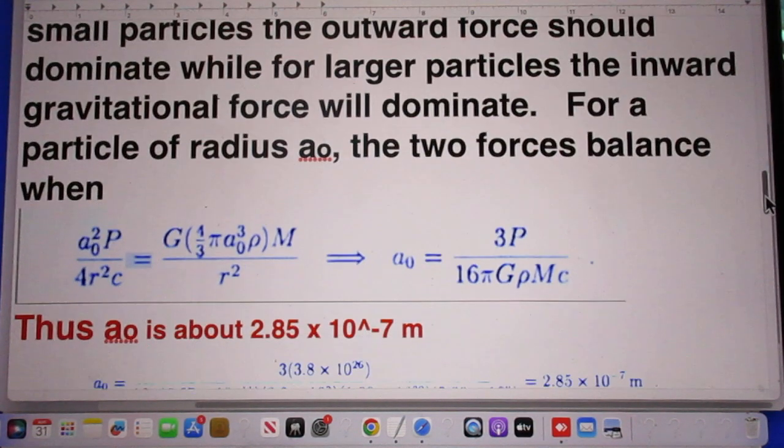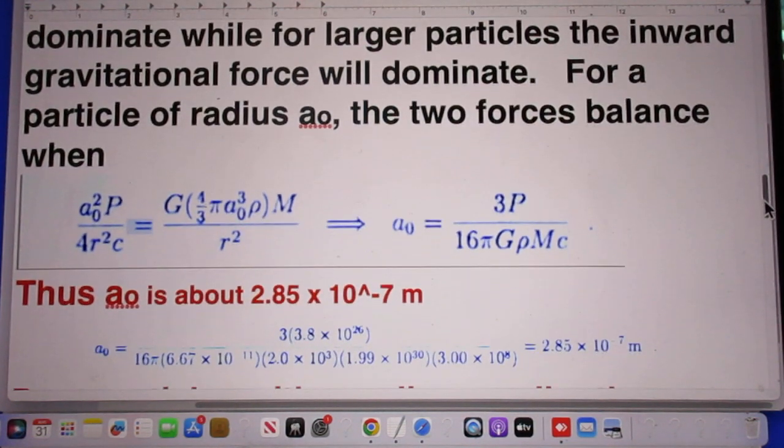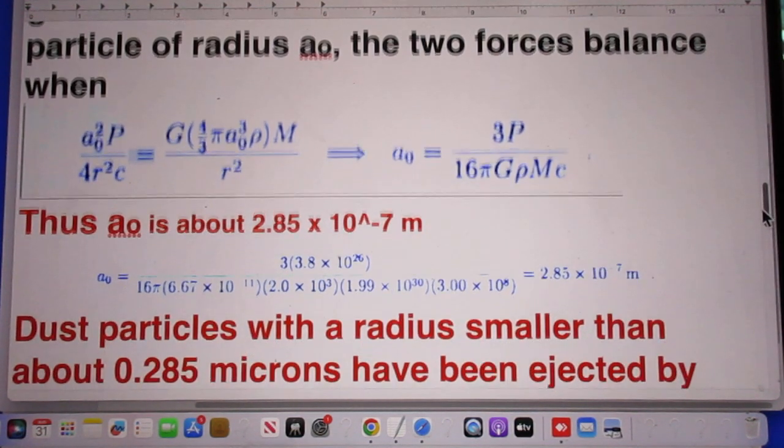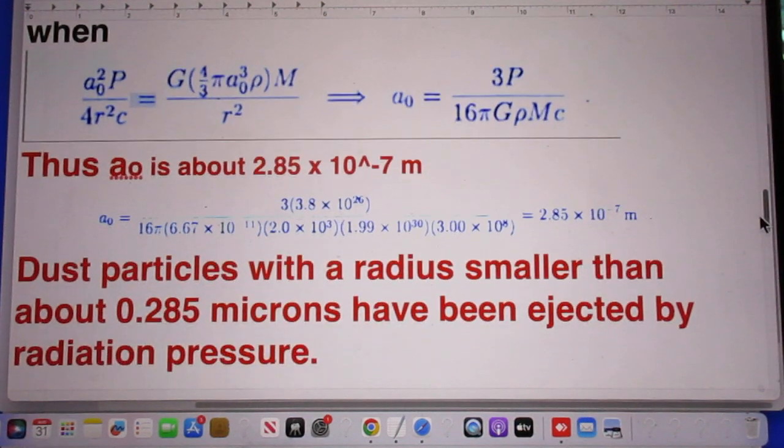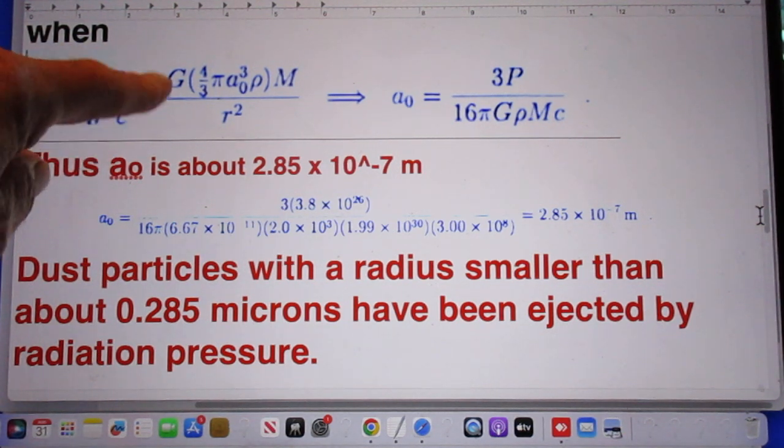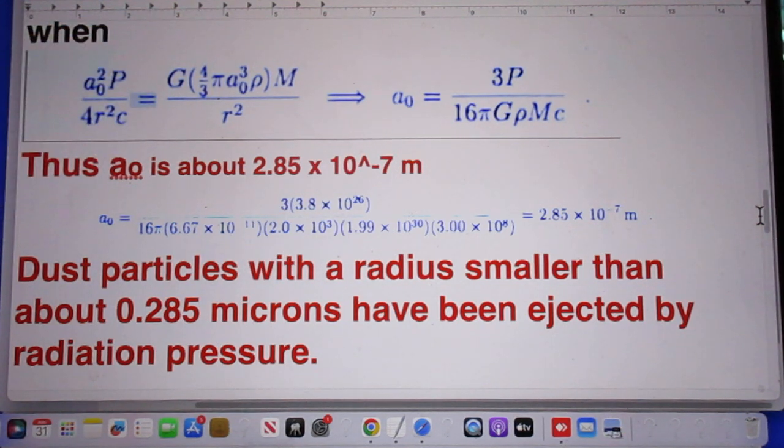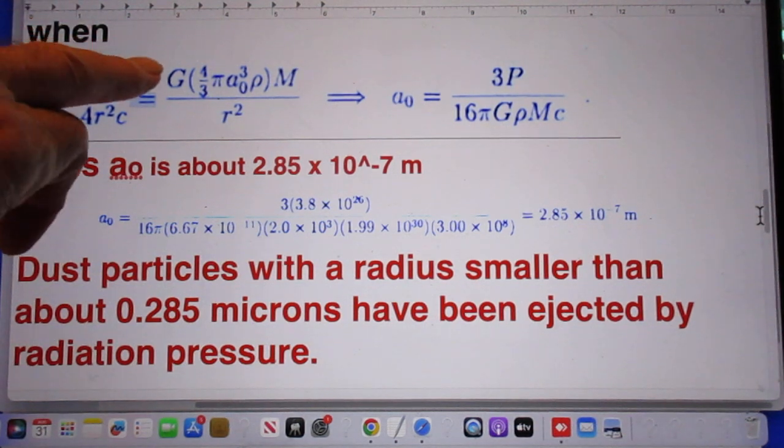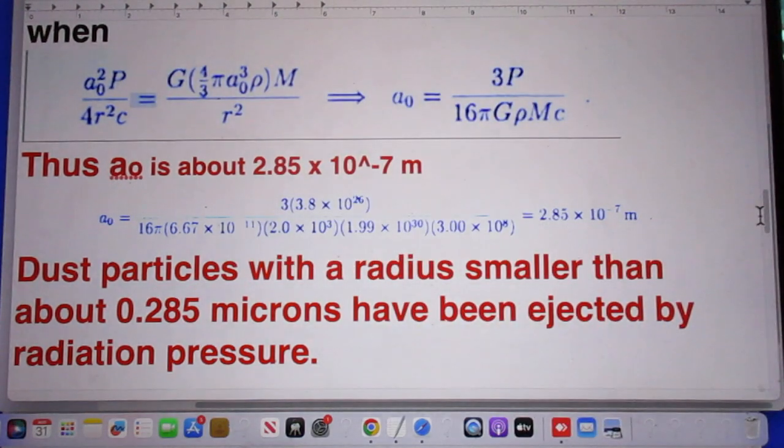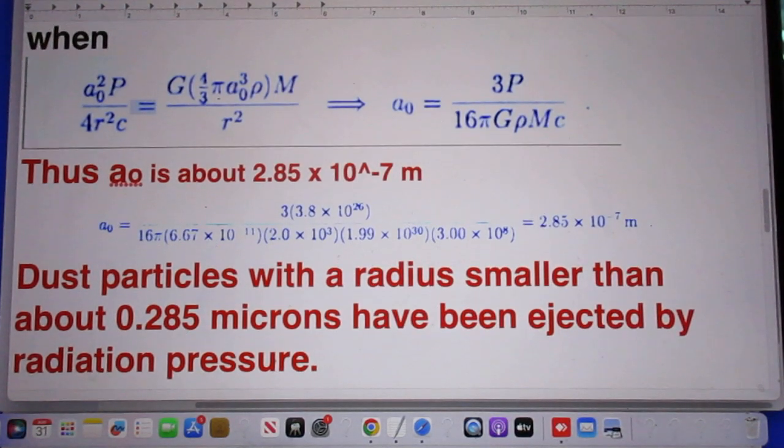For a particle of radius A zero, the two forces balance when the following is the case. Look at this. So this is the radiation force, the force due to radiation pressure. And this is the force due to gravity. This force is outward, this force is inward. And so you find A zero.